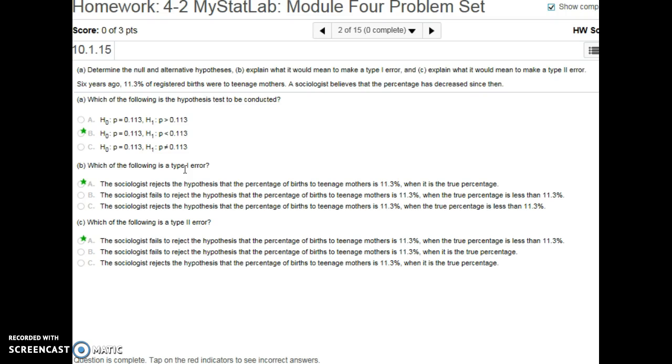So, in fact, in reality, if you looked at every single possible birth, this is the true proportion. But just based off your sample, you thought you had enough evidence to reject it. So that's a type 1 error.